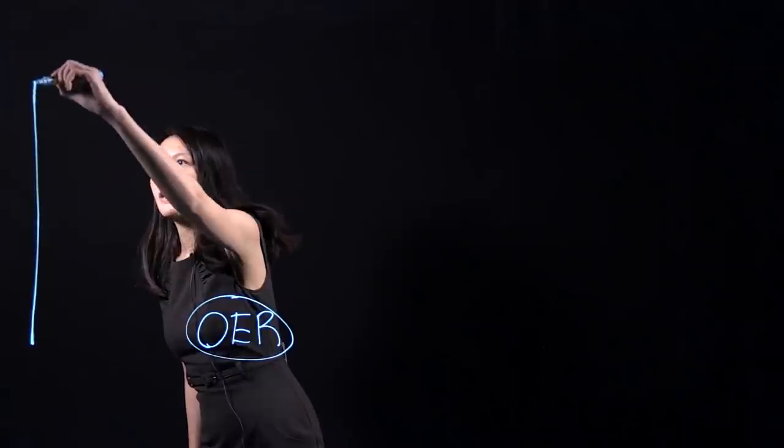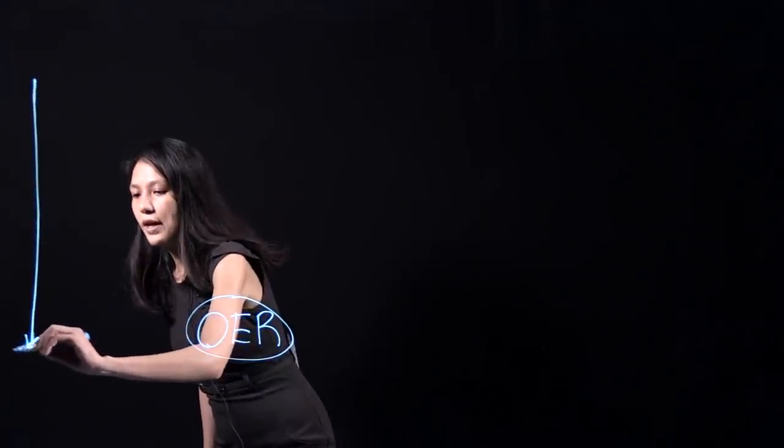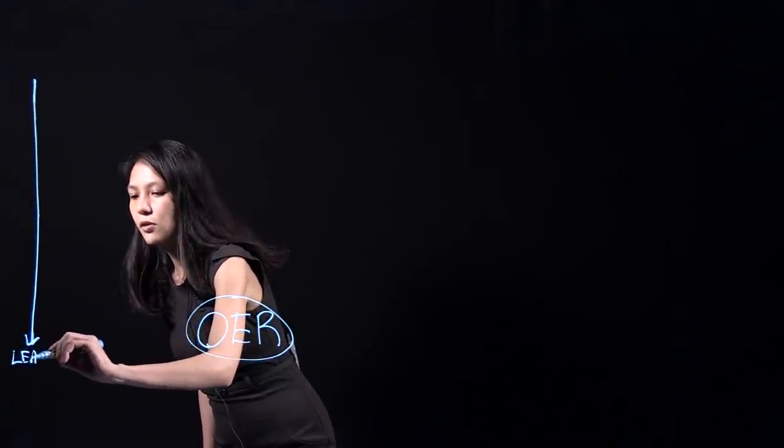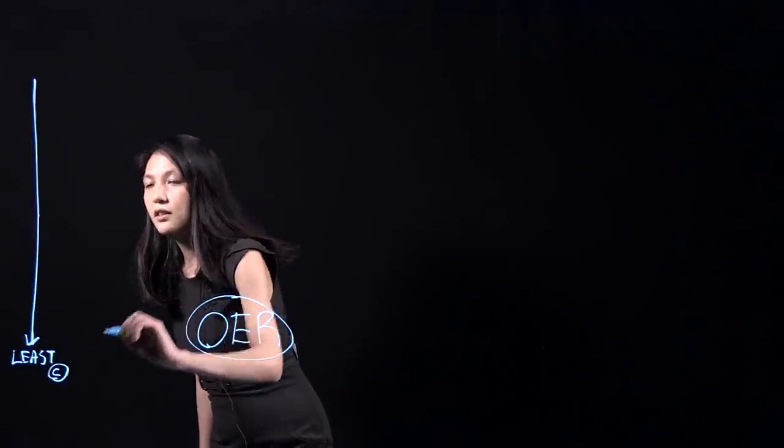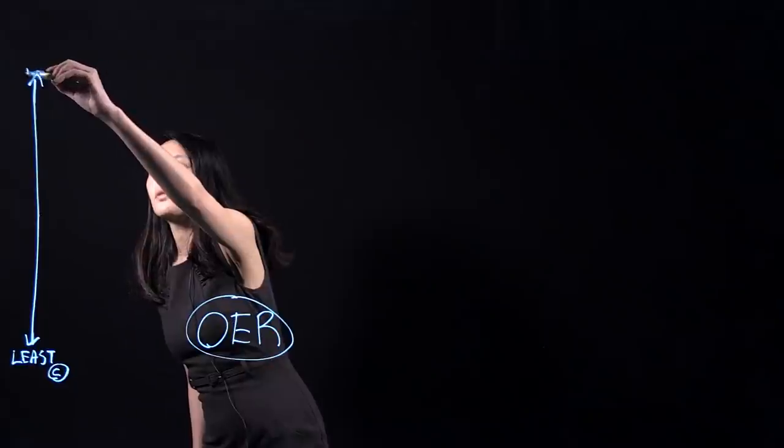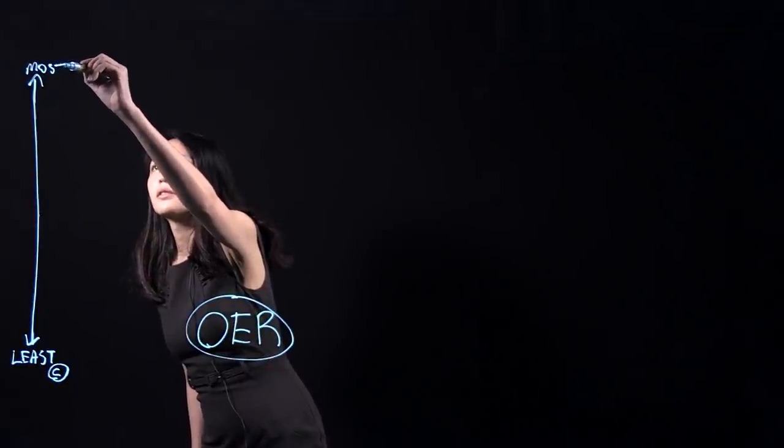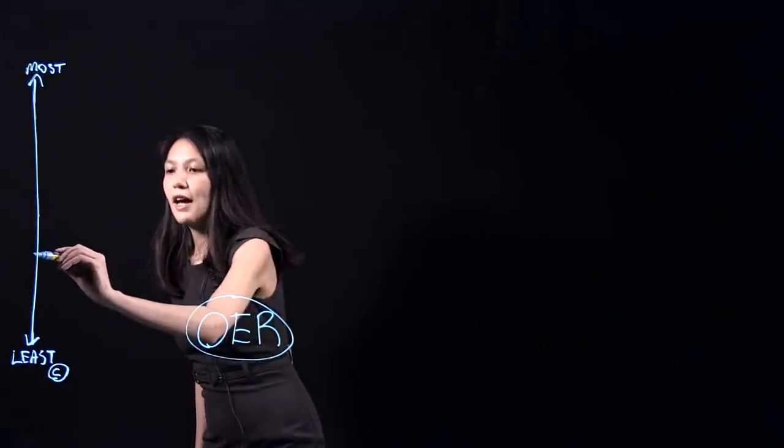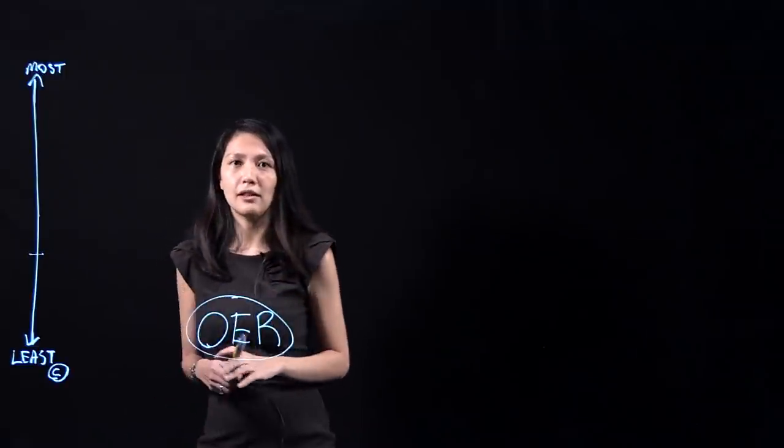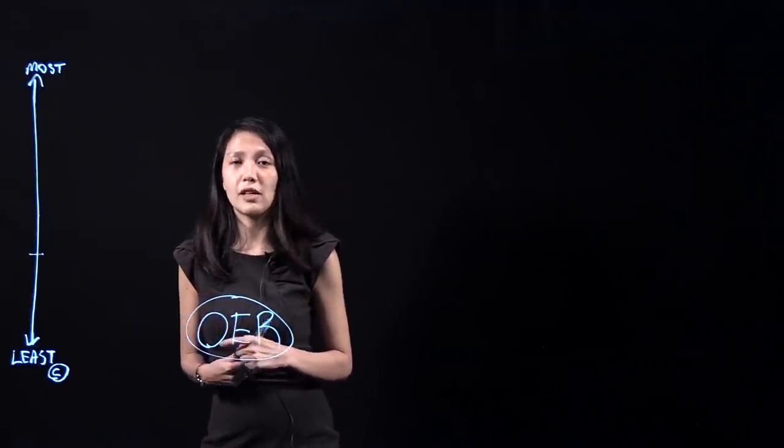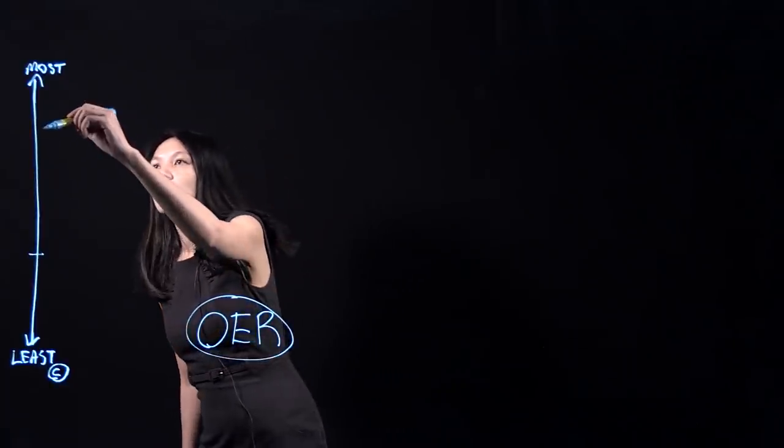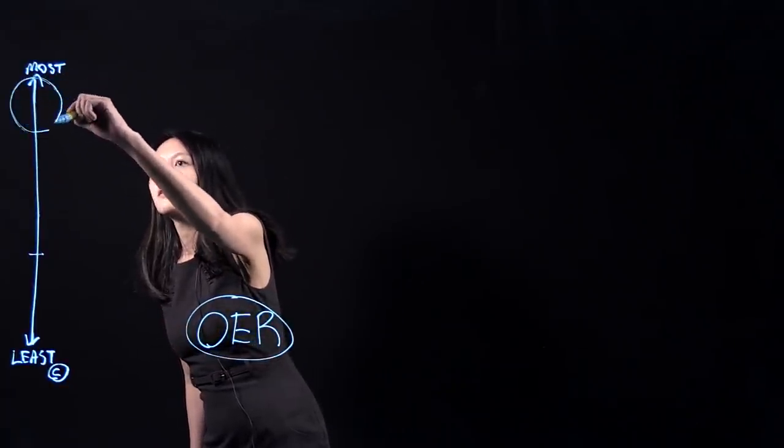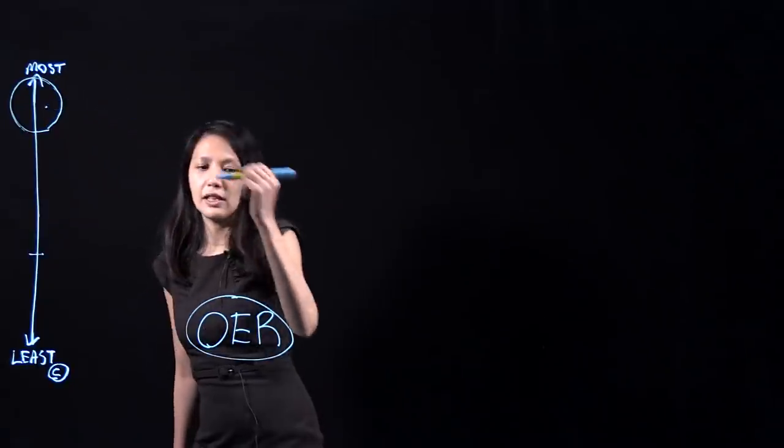This is kind of like a spectrum where you have the least open, so copyright would be somewhere here, all the way up to the most open. Somewhere in the middle you might have some resources where you can actually download and use, but you cannot change or modify. Up here is where you have the most flexibility and this is where OER generally lies.